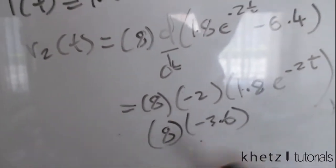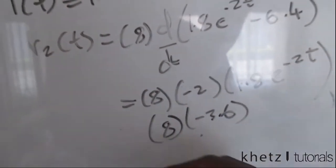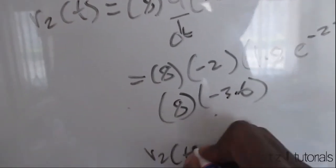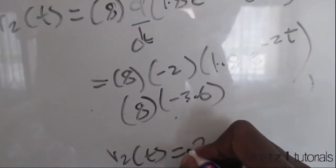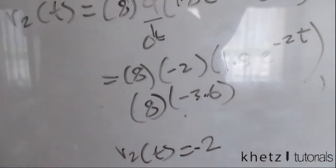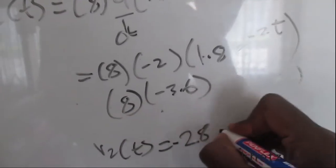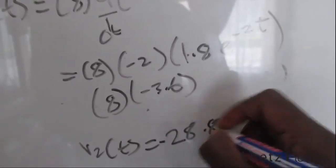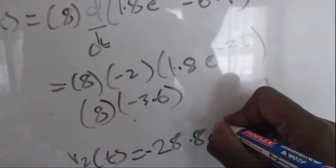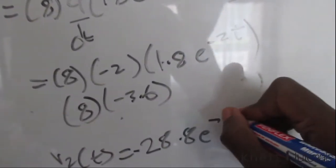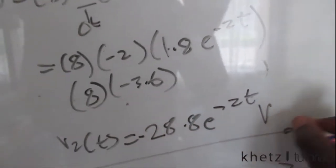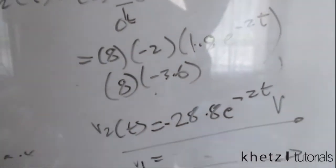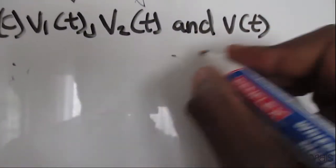Completing the multiplication: 8 × (-2) × 1.8 = -28.8. Therefore v2(t) = -28.8e^(-2t) volts. Now we proceed to find the total voltage v(t).